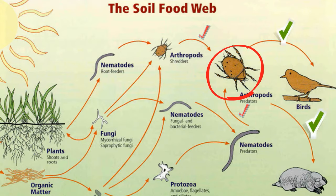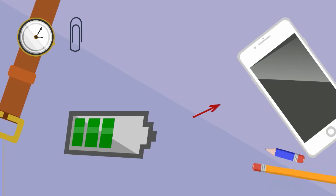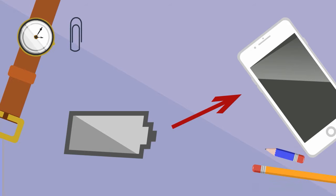In simple terms, birds and animals eat arthropods, and arthropods eat smaller arthropods and nematodes. The arrows always point towards where the energy is flowing.